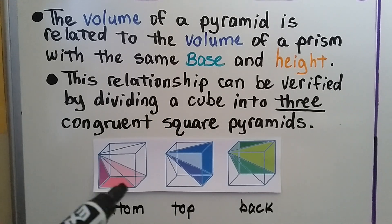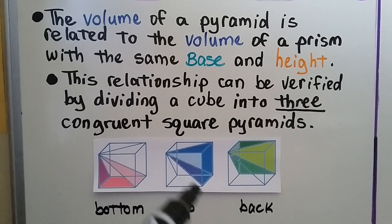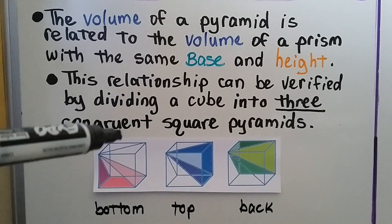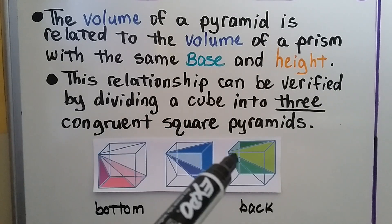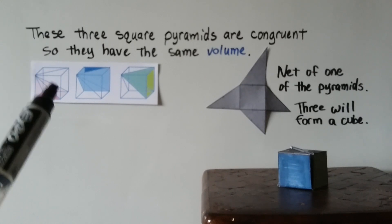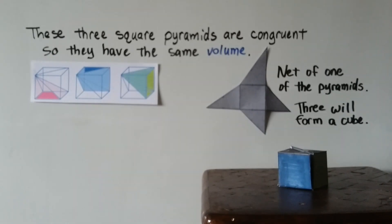We have this reddish one down here, then above it would be this bluish one, and then in the back here would be the green one. These three pyramids are congruent, so they have the same volume.